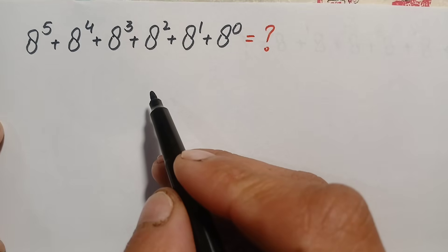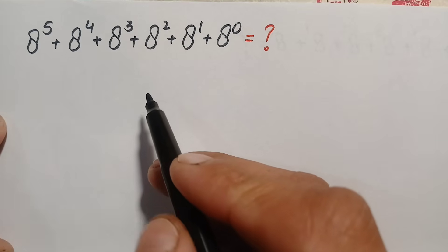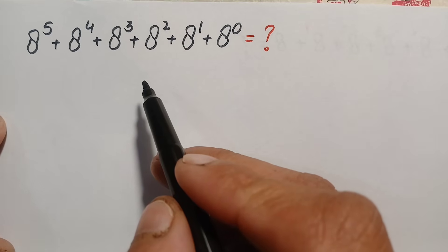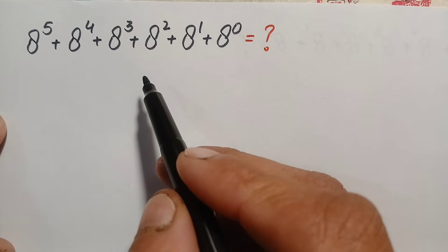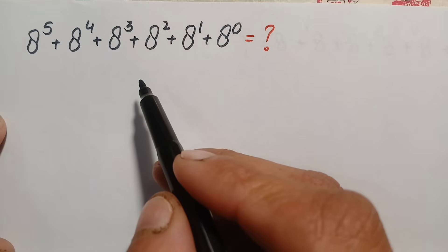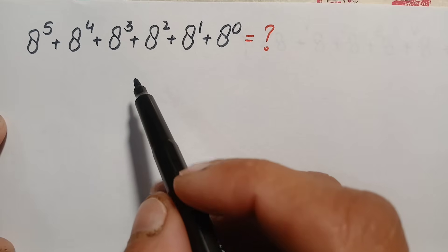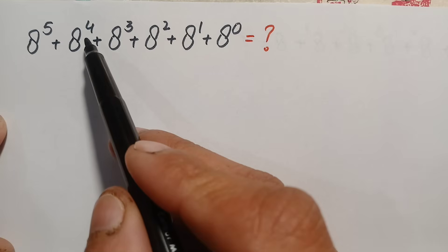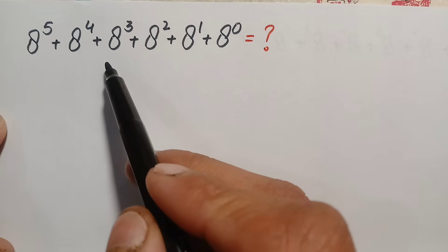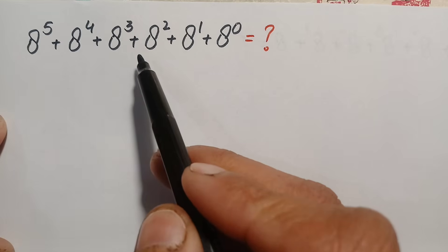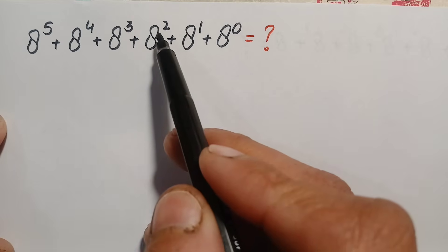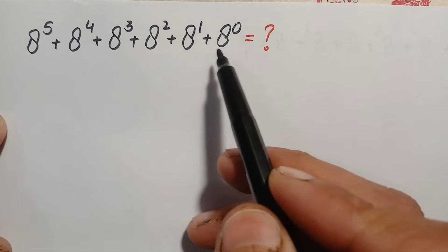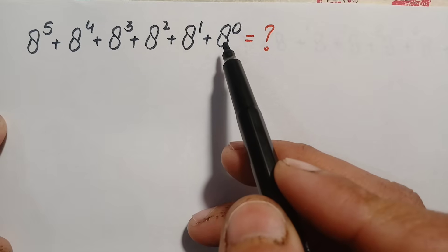Hello everyone, you are welcome. How to solve and find the value of this beautiful exponential math problem, which is: a raised to power 5, plus a raised to power 4, plus a raised to power 3, plus a raised to power 2, plus a raised to power 1, plus a raised to power 0.